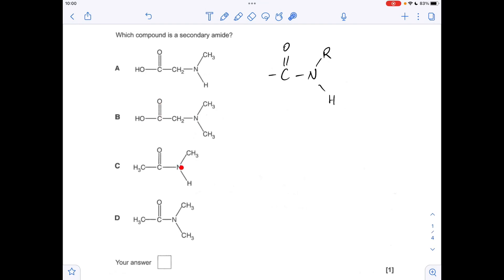What about C? Well, C has got this feature in it, so you've got your C=O bonded to your N bonded to your carbon group. So C was the answer. We'll just do D for revision purposes - D is a tertiary amide.